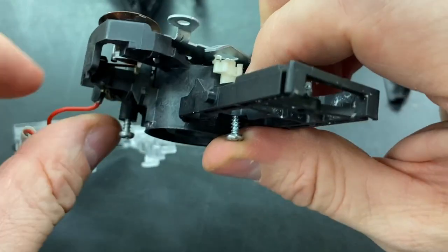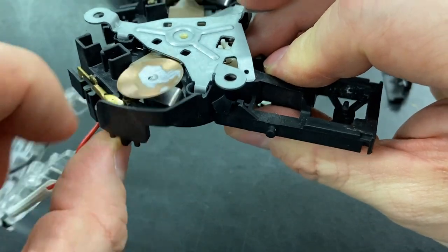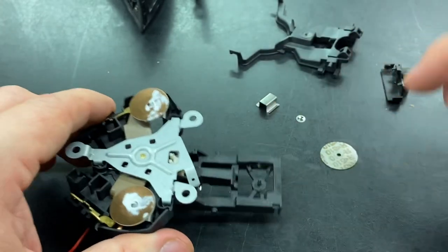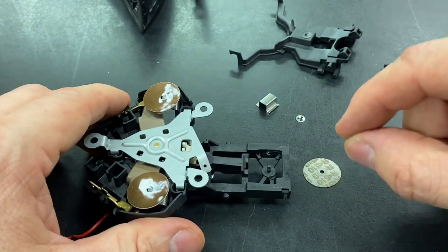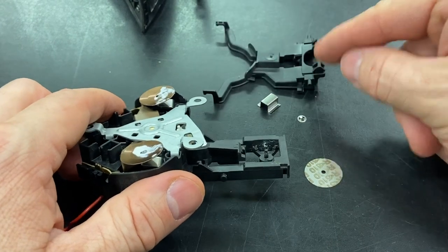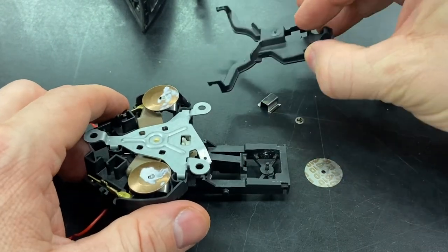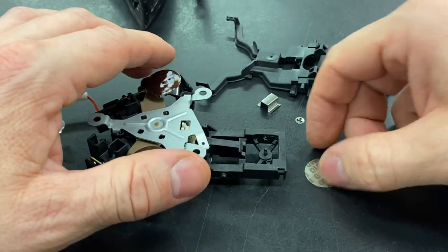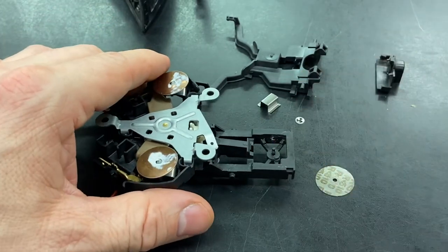So in order for this disc to lift this rocker arm and to open the circuit, it needs to be solidly mounted on this tiny pin. Let me show you how this disc works.